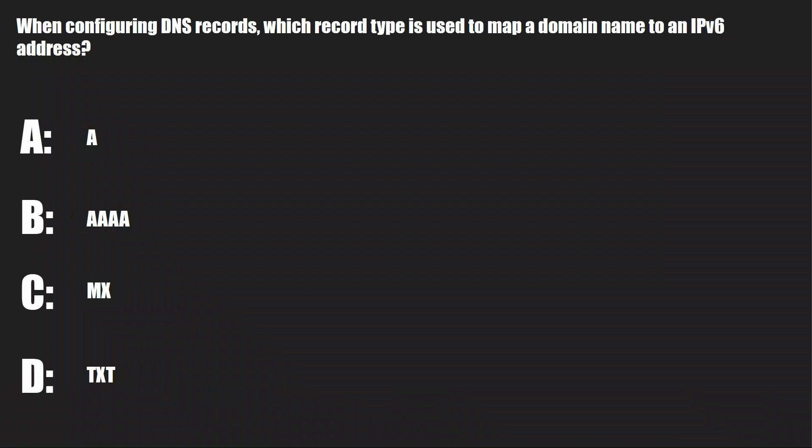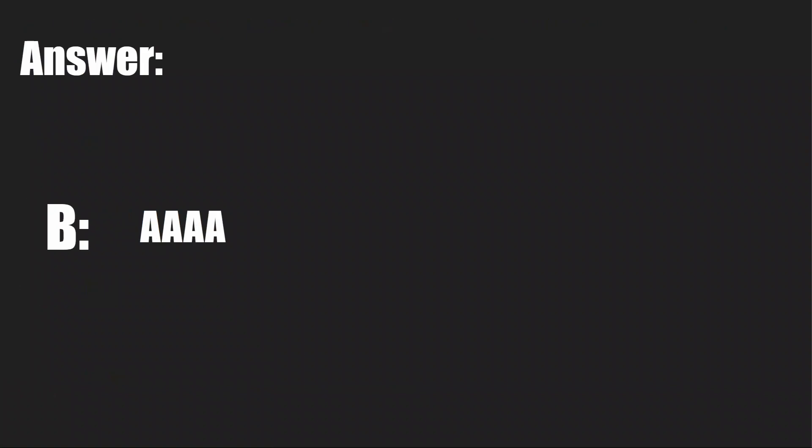Question one: When configuring DNS records, which record type is used to map a domain name to an IPv6 address? A: An A record? B: An AAAA record? C: An MX record? Or D: A TXT record? And the answer is B, an AAAA record.